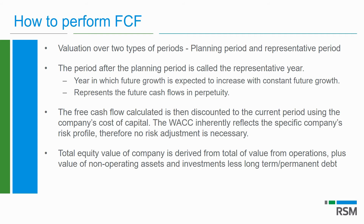The weighted average cost of capital (WACC) is used to reflect the specific company's risk profile, so once you have applied the WACC it is not necessary to make another adjustment for risk purposes. To arrive at the total equity value, you take the value of the operations, add the value of any non-operating assets and investments that are not part of operations, and deduct any long-term or permanent debt that is not part of the working capital of the company.